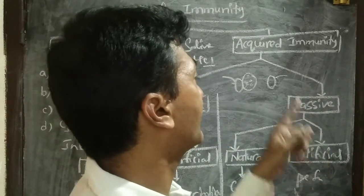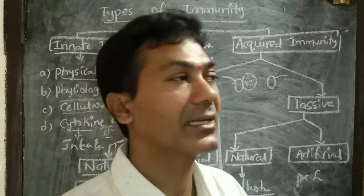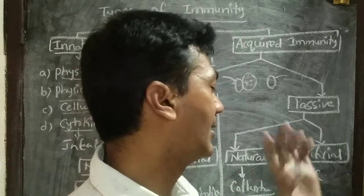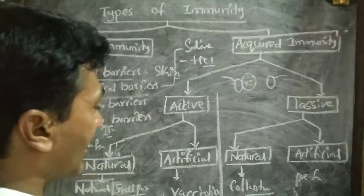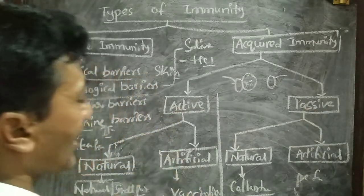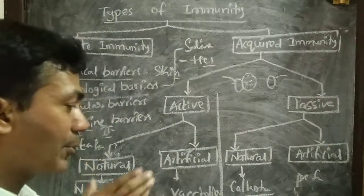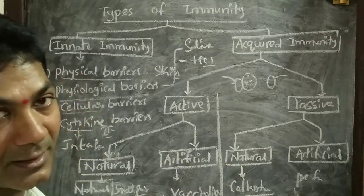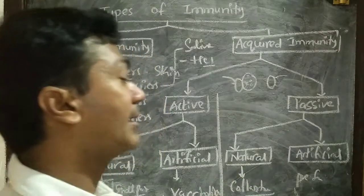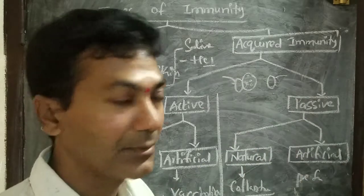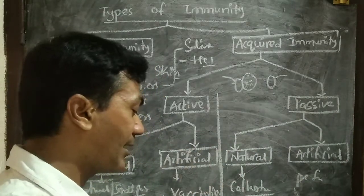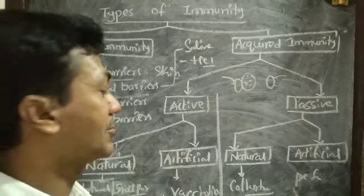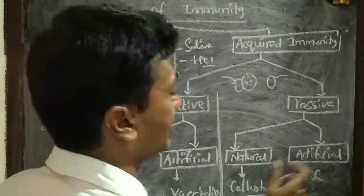For example, if a person got rabies and pre-formed antibodies are injected, after some months if a dog bites again, they must go for pre-formed antibodies again. The difference between artificial active and artificial passive is: in artificial active (vaccination), the body is provoked to produce its own natural antibodies; in artificial passive, we are directly injecting the antibodies. That is the difference between artificial active and artificial passive immunity.